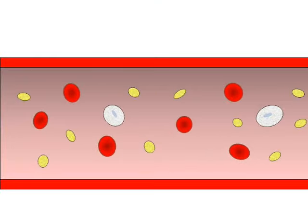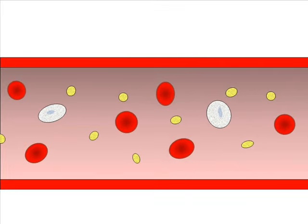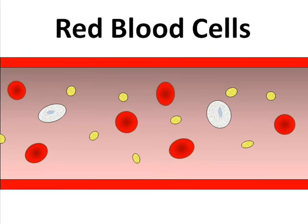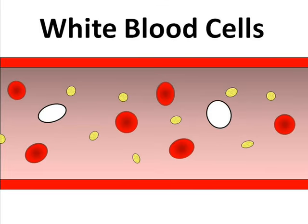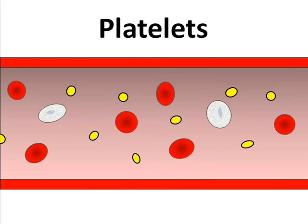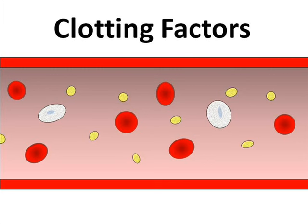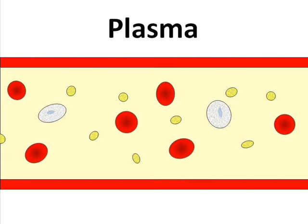In this illustration, the blood vessel contains red blood cells, white blood cells, platelets, and tiny proteins called clotting factors. These components of the blood float together in a straw-colored liquid called plasma.